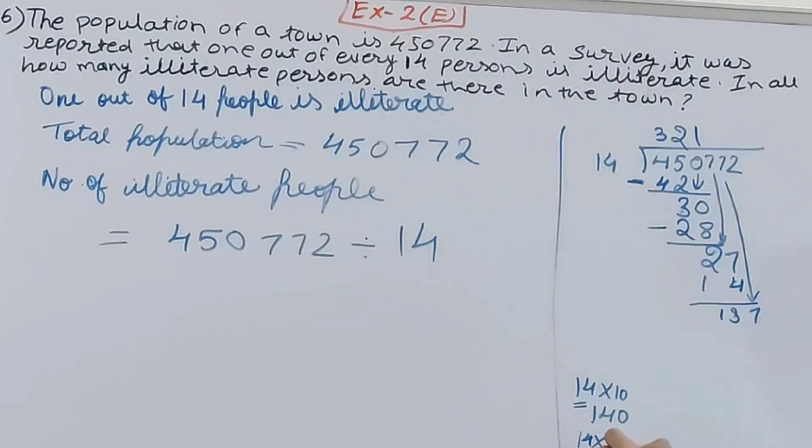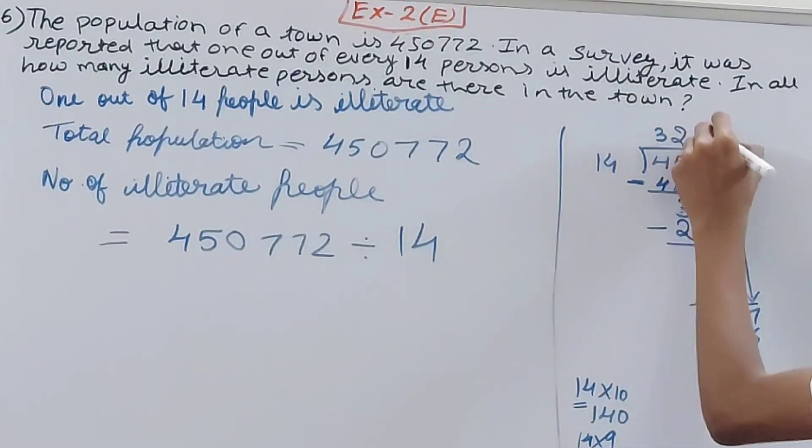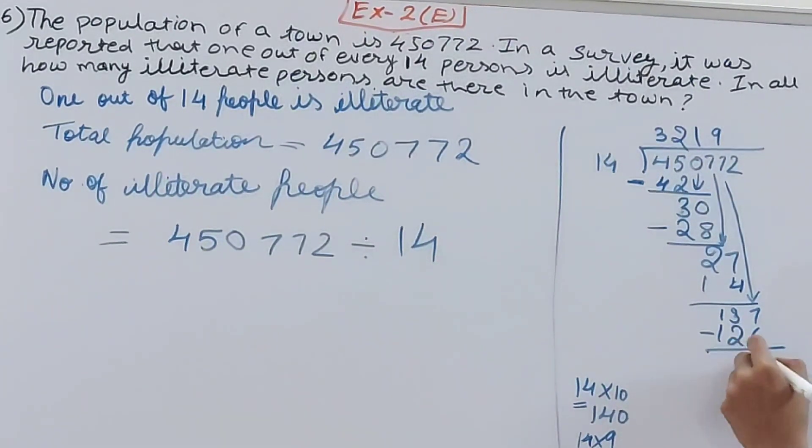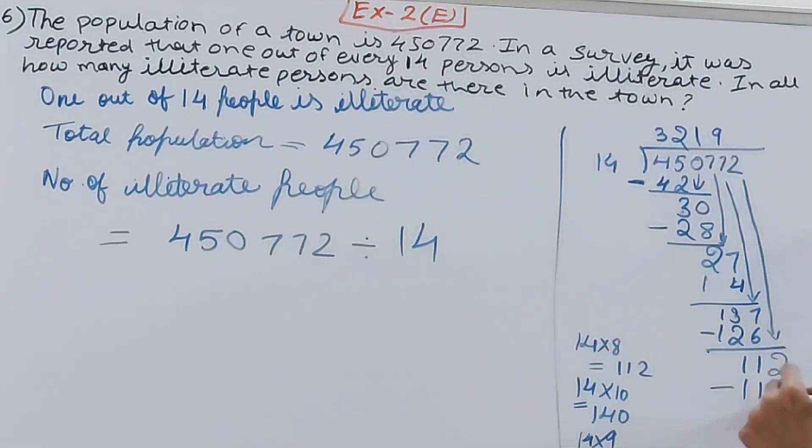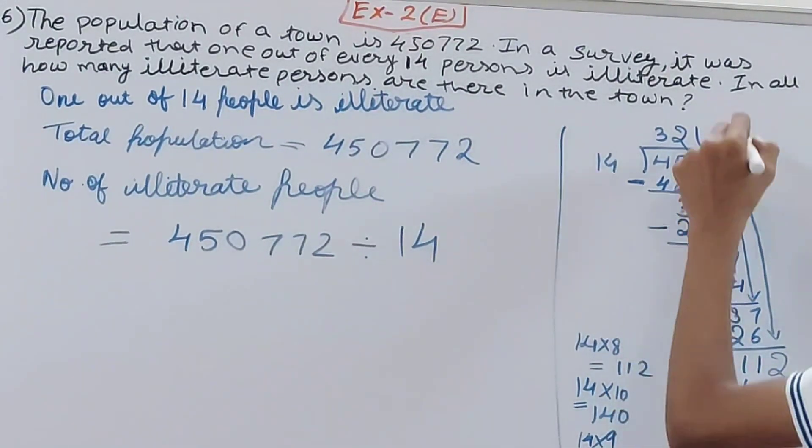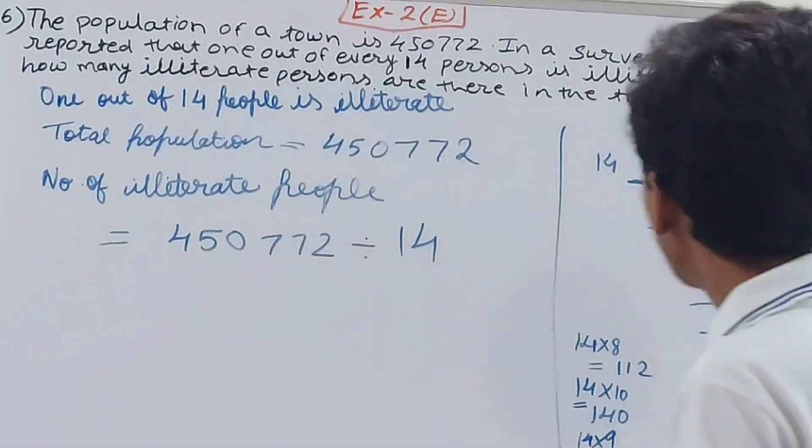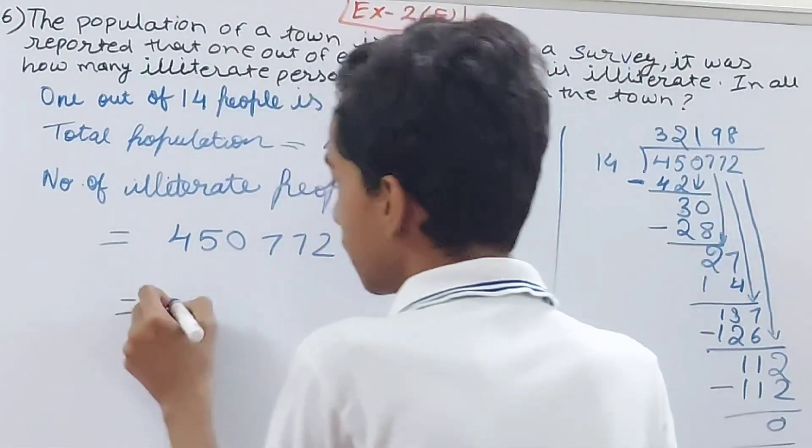This is simple. We know the table of 14: 14 into 8 is 112. So here minus 112, and here 8. So what do you get here? 32,198. This is the number of illiterate people that are there in the village.